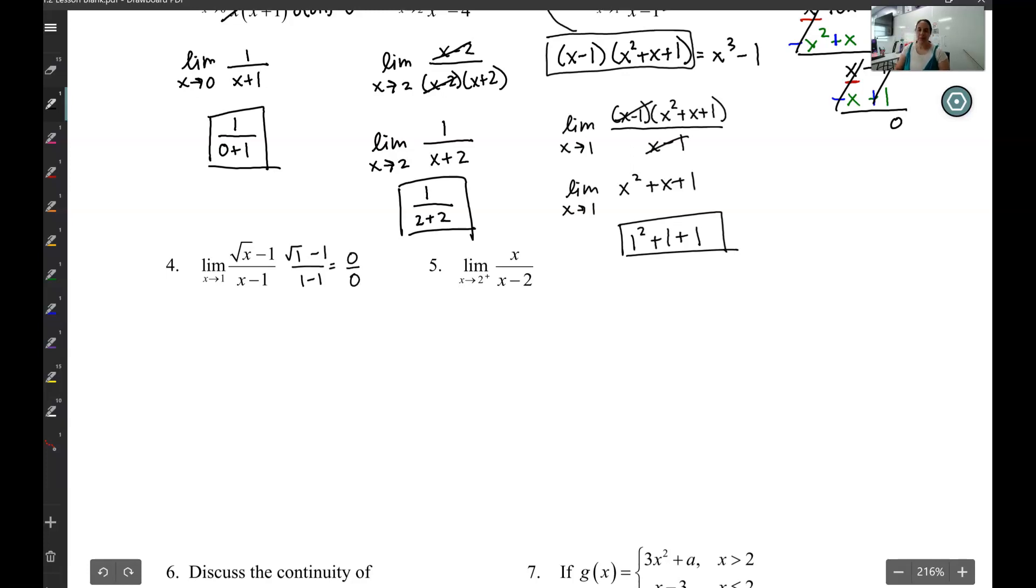That's my indeterminate form, which means I can do some algebra here and simplify this. Because whenever you see roots, your first instinct should be multiply by the conjugate, meaning basically creating difference of squares. Because when I have difference of squares, those roots are going to go away.